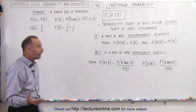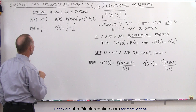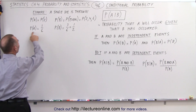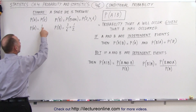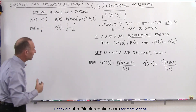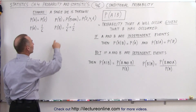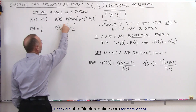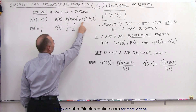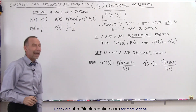Let's apply that to our example. The probability of A is 1 out of 6, because 2 is only 1 of 6 numbers you can get when you throw a die. The probability of B is 3 out of 6, because there are 3 even numbers out of a total of 6, which gives a probability of 1 half.